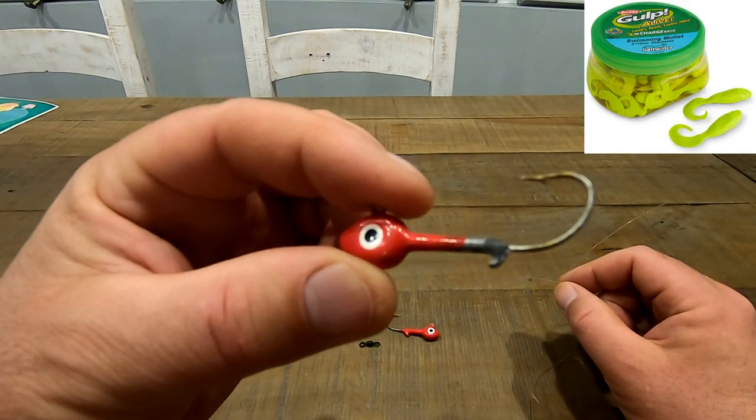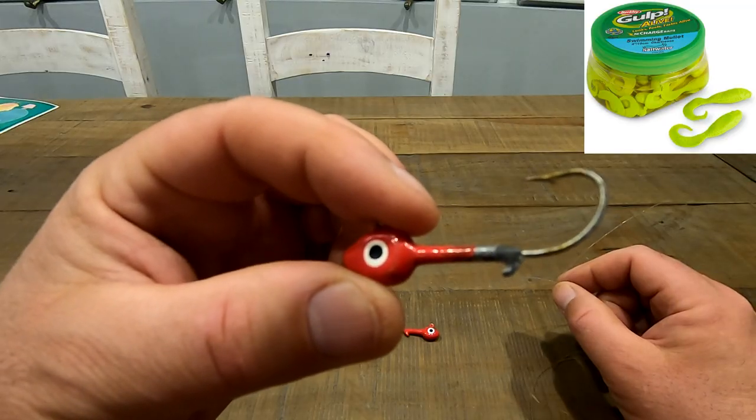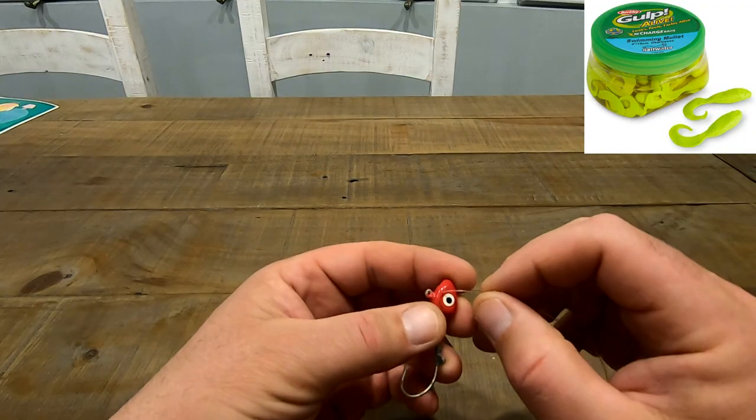And what we're going to tip these with is a little gulp swimming mullets, so the smaller the better. Start off tying one of those.